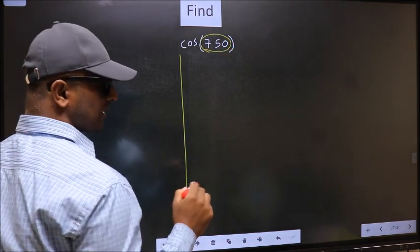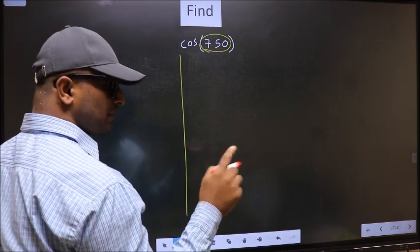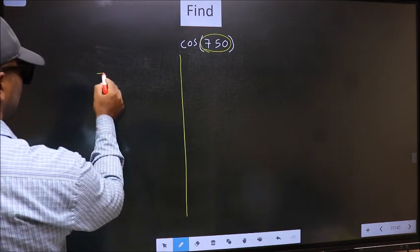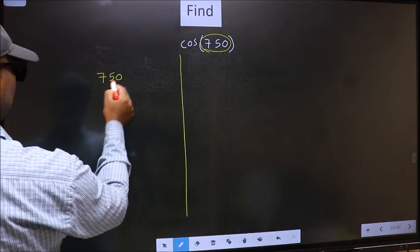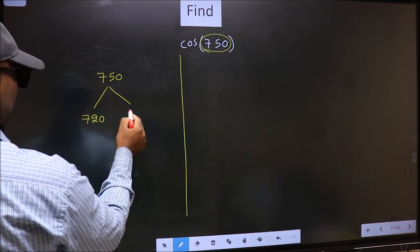Now you should check 750 lies between which two multiples of 180. What I mean is, 750 lies between 720 and 900.